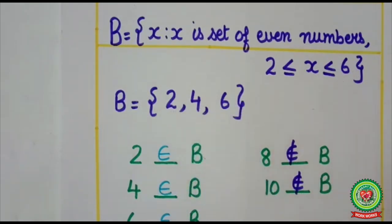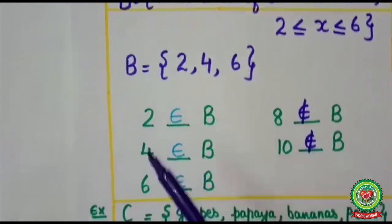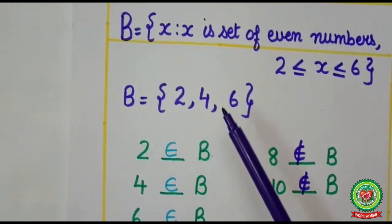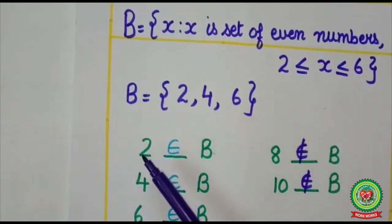Next even number is 4, and the last one is 6 because here also equals to sign is coming. So here 2, 4, 6, these elements are coming in set B. Now as you can see 2, 4, 6, these are the members of set B. Then 2 belongs to set B, 4 belongs to set B, 6 belongs to set B.